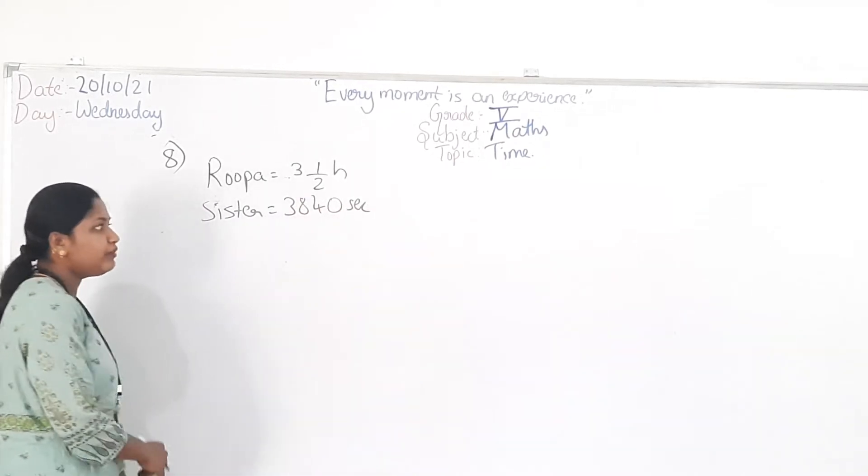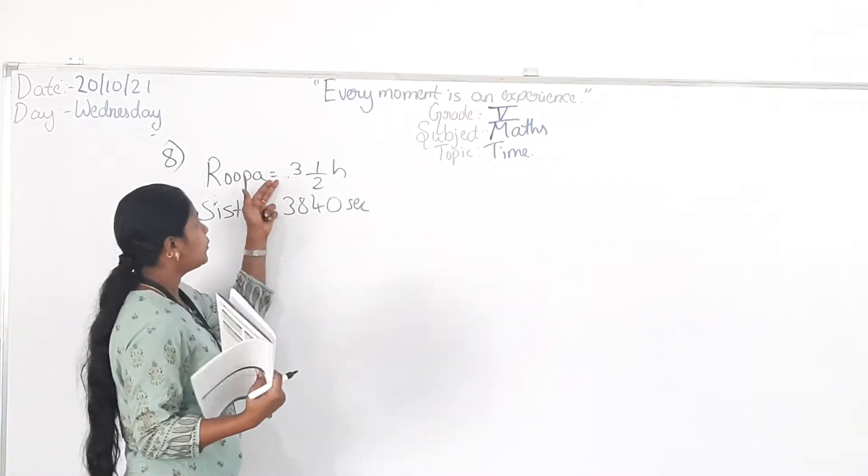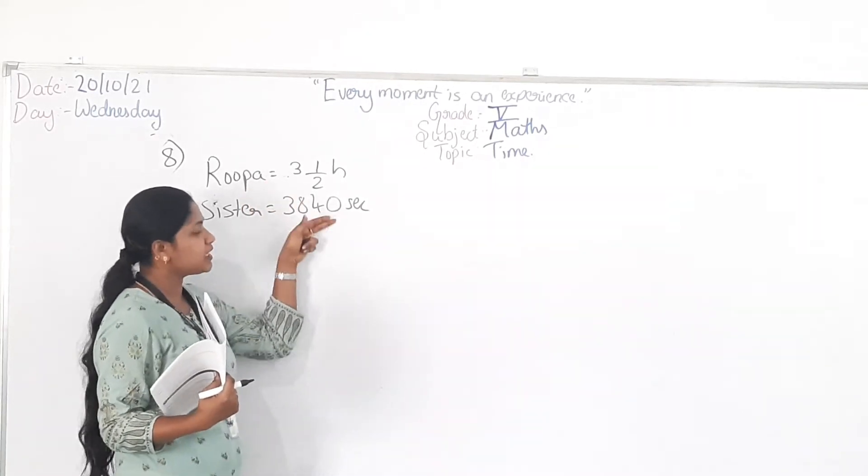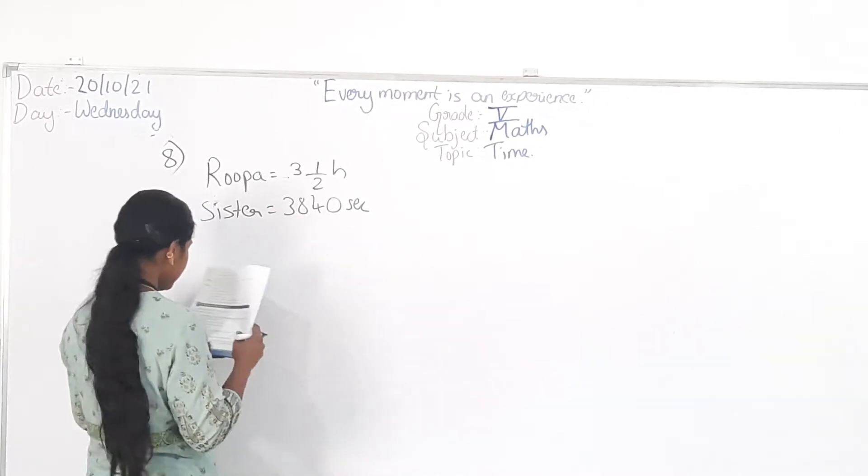So how do you find out this? First we convert. First we convert Rupa's hours into seconds or the seconds into hours. Then only you can find out who's going to travel longer.